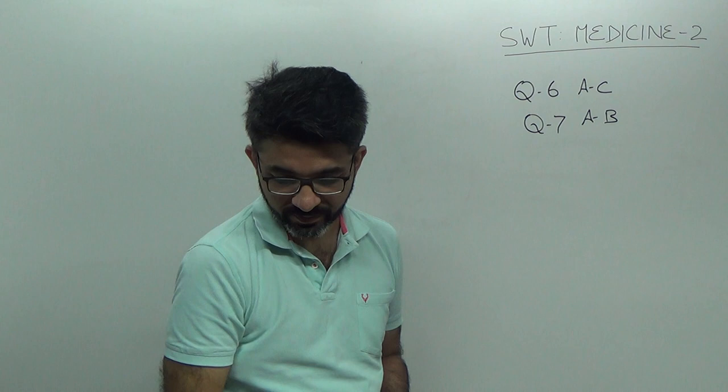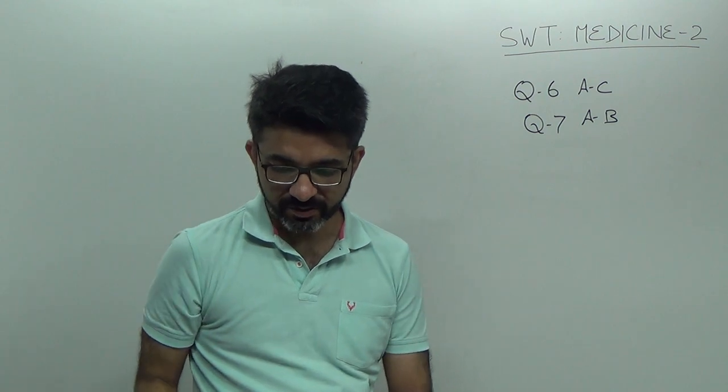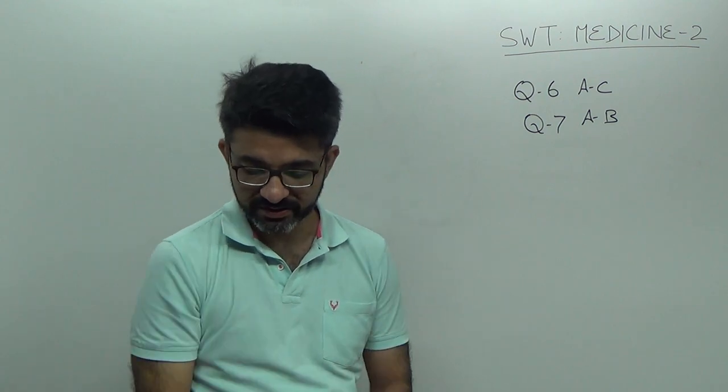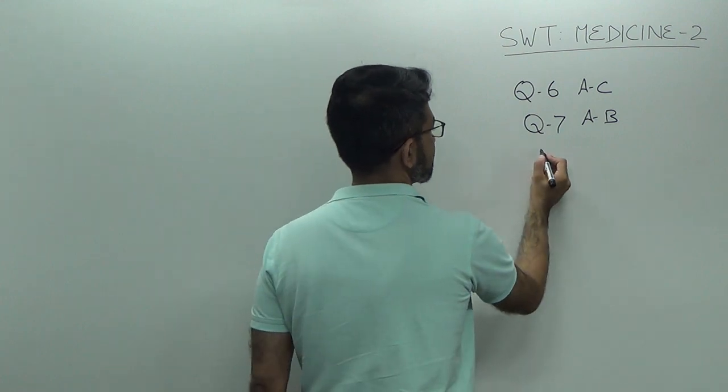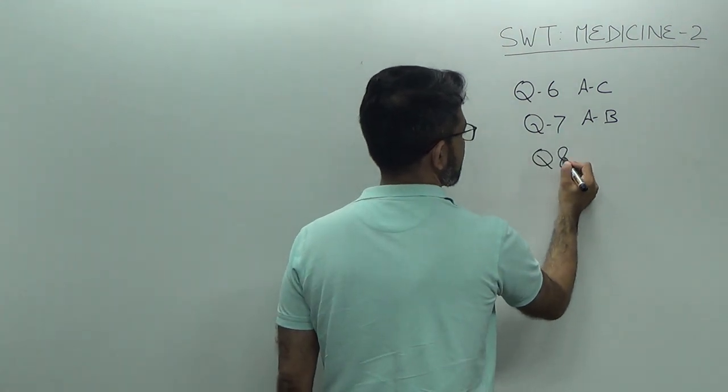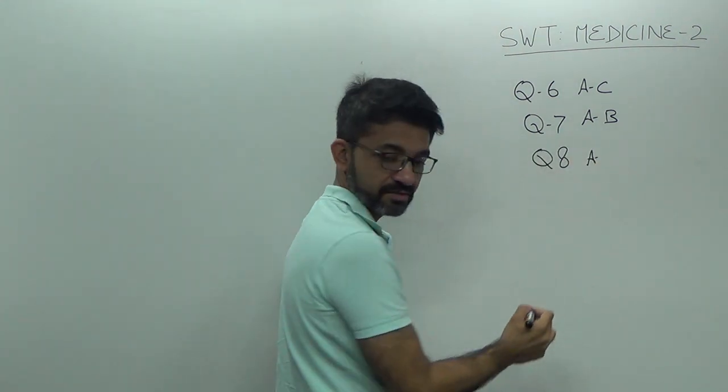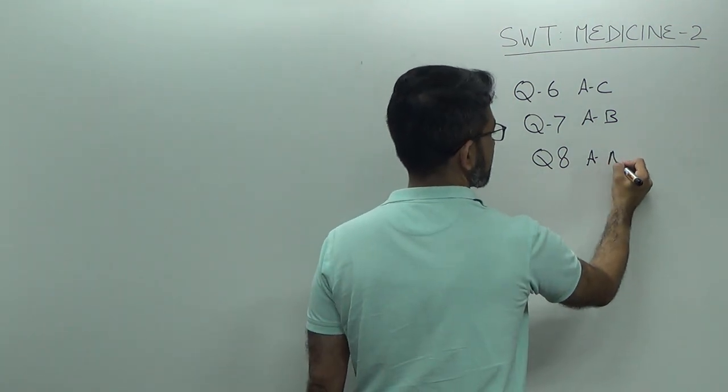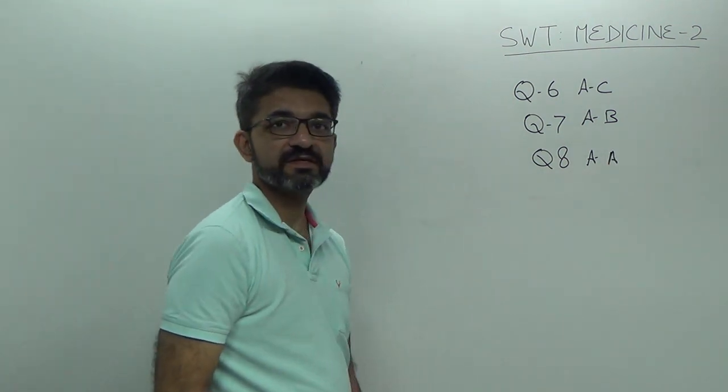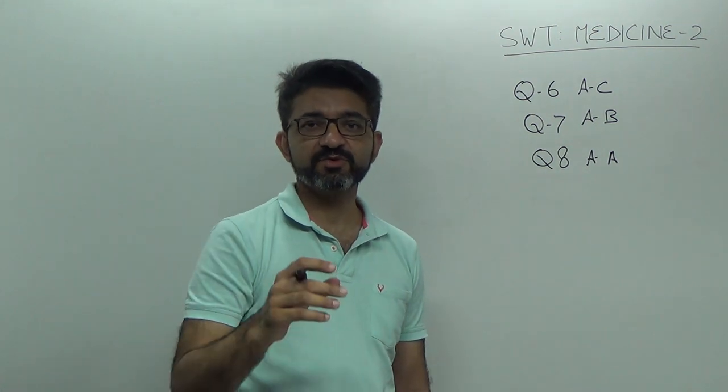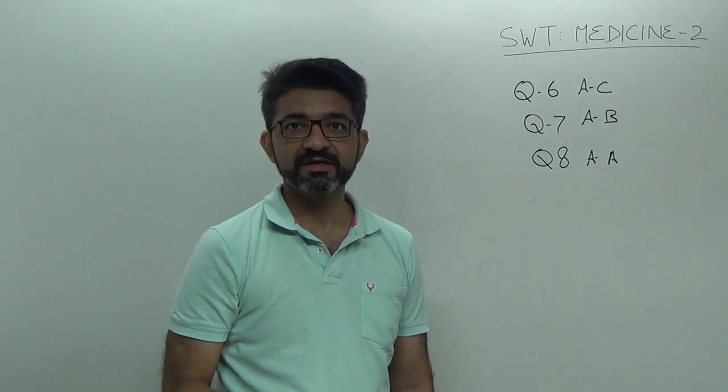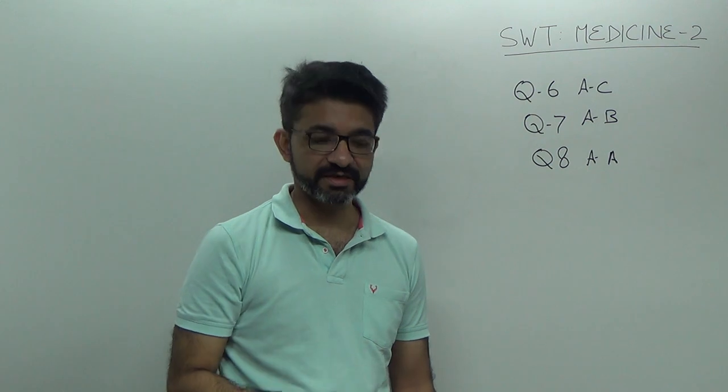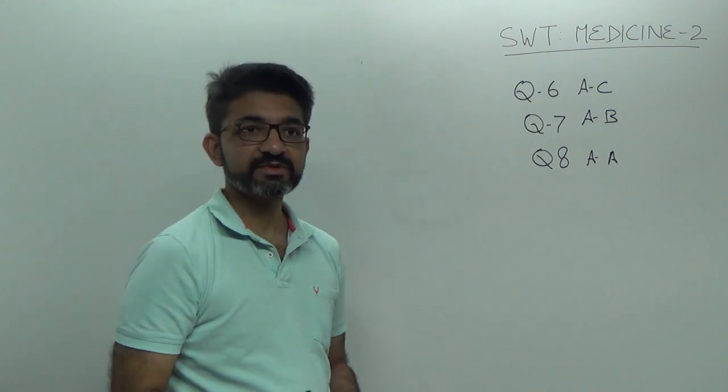Question number 8, Lorcaserin. Lorcaserin is an anorexic agent. Question number 8, answer is A. Lorcaserin is an anorexic agent. It acts upon 5HT2C receptors. Thereby it decreases the food intake and thereby helps in controlling diabetes.